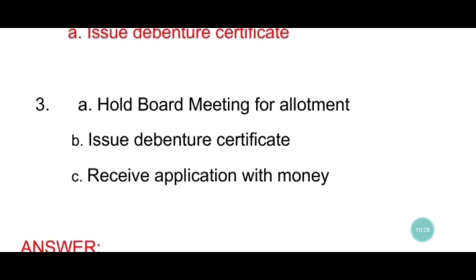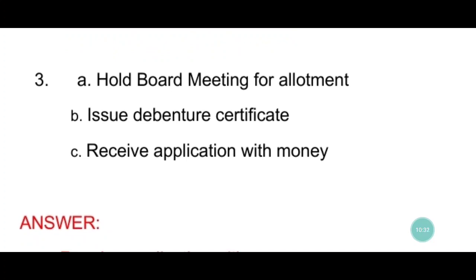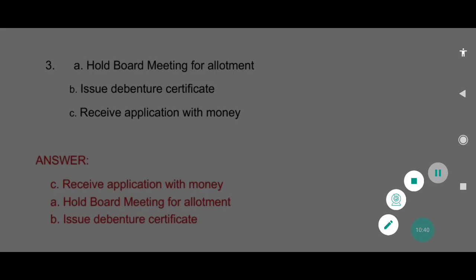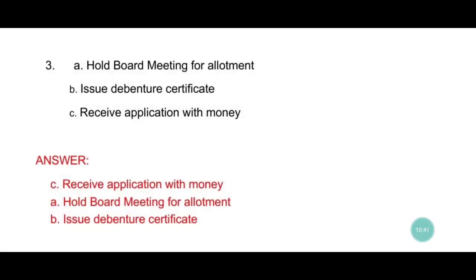Third set: hold board meeting, issue debenture certificate, receive application with money. The answer is: first receive application with money, then hold board meeting for allotment, then issue debenture certificate. Students, in this video we have completed question 1. I will upload all the remaining videos by tomorrow. The link for the full SP question bank playlist is provided — you can find the complete SP question bank there.